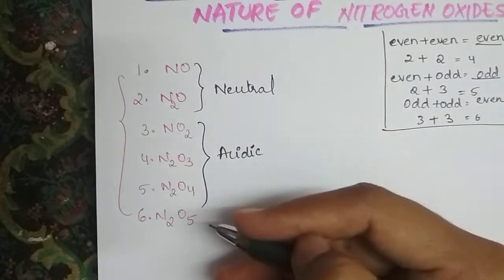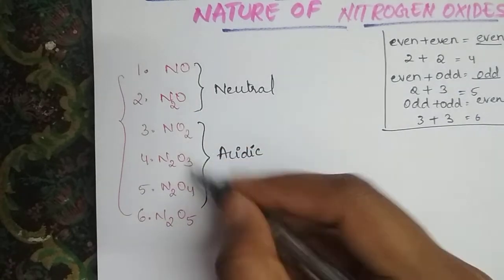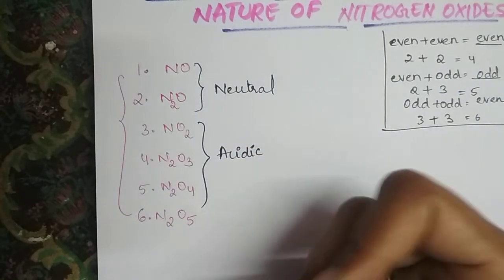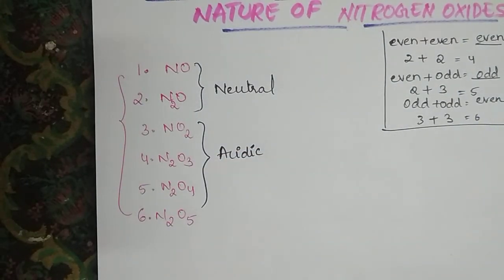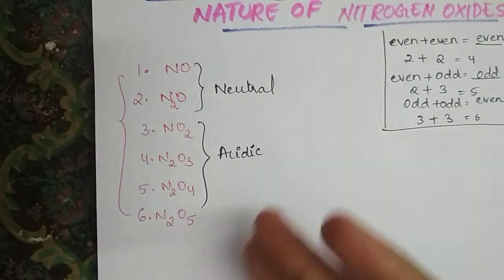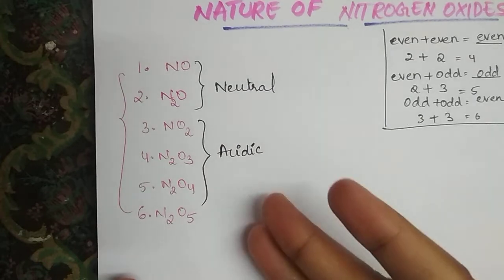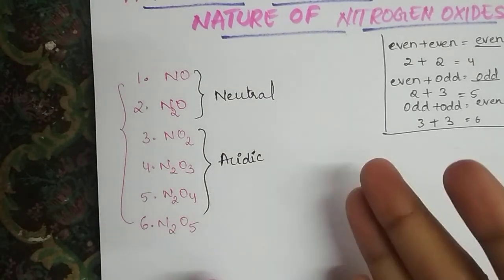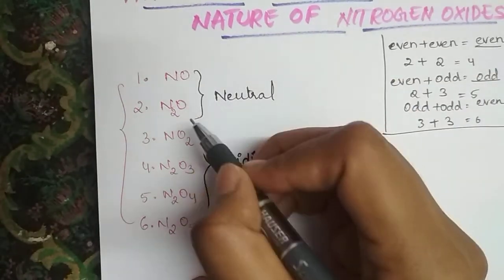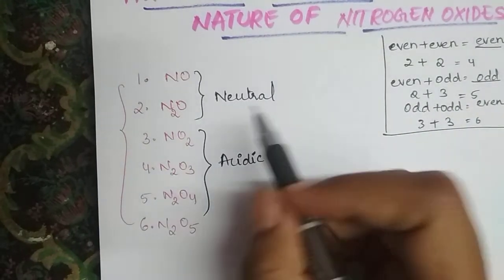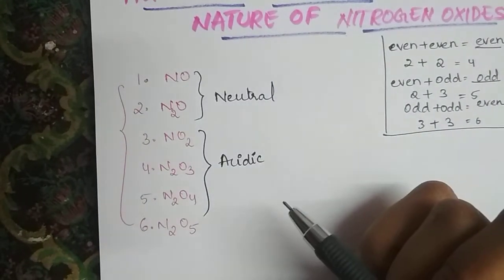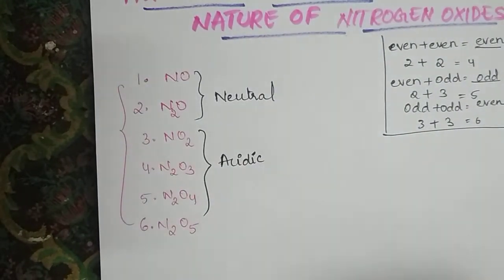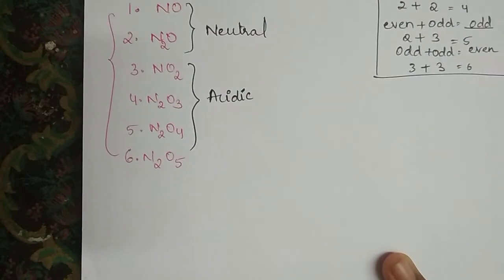These are all non-metal oxides, so normally they should be acidic in nature. But these first two are exceptional cases — they are neutral in nature. I will make a separate video on that later. For now, let's focus on the trick about magnetic nature.